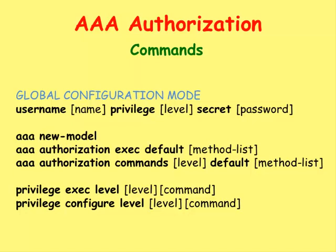In other words, it will give Alice a Privilege Level of 15, Bob a Privilege Level of 7, Cindy a Privilege Level of 1, and Dan a Privilege Level of 0. The AAA Authorization command allows you to set the method level that each level will use in order to check for authorization.